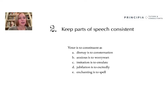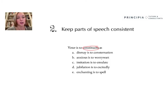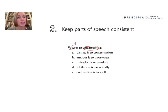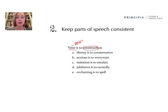Our analogy here is voter is to constituent. Let's say I don't know what the meaning of the word constituent is, and I can't figure out what part of speech it is either. I'm going to have to rely on the word voter and my knowledge that that is a noun. Now I'm going to check out all of the first words in the analogy answer choices and see if any of them are nouns. If not, I'm going to eliminate them.